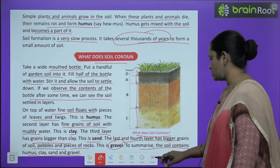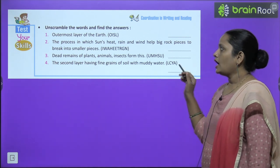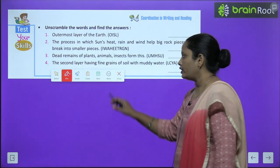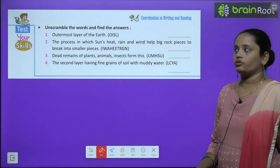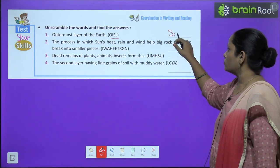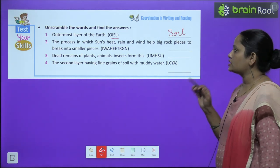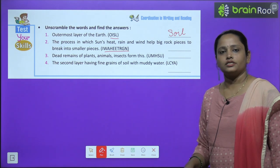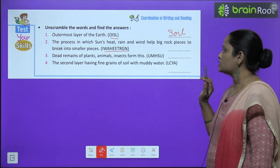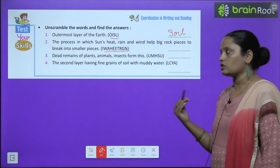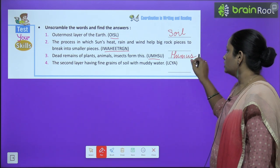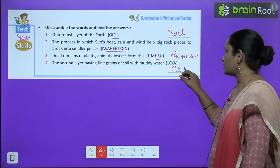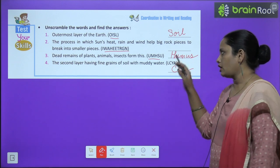Now let's test your skills — unscramble the word and find the answers. The outermost layer of the earth — the answer is soil. The process in which sun's heat, rain, and wind help break big rocks into smaller pieces — you have to unscramble that. Dead remains of plants, animals, and insects form humus. The second layer having fine grains of soil with muddy water is called clay. Children, you have to do the second one yourself.